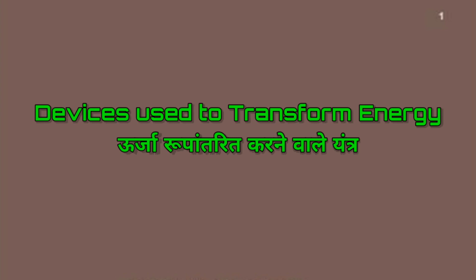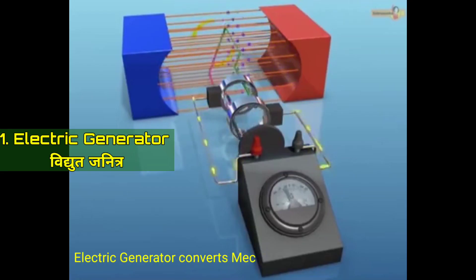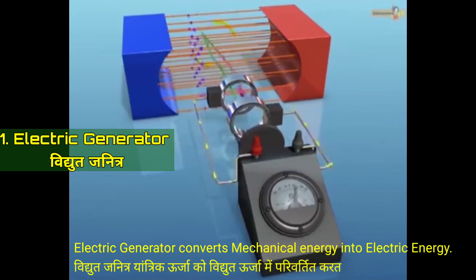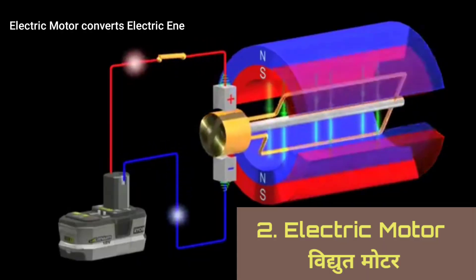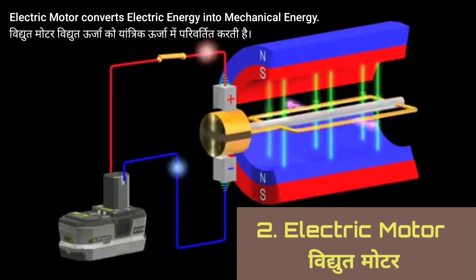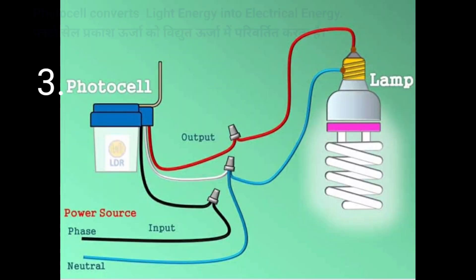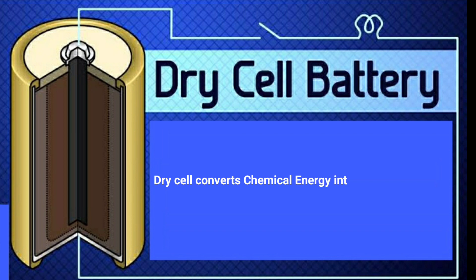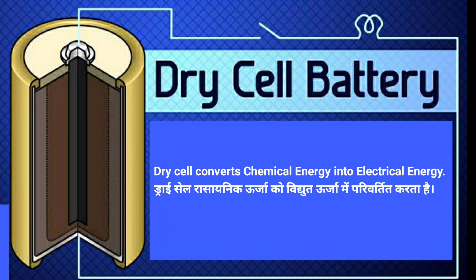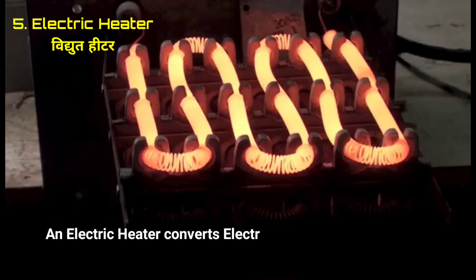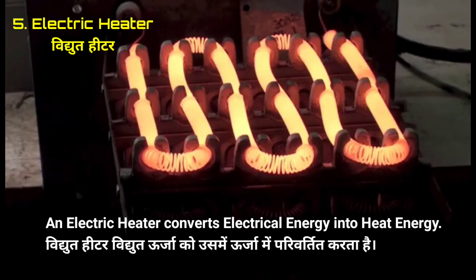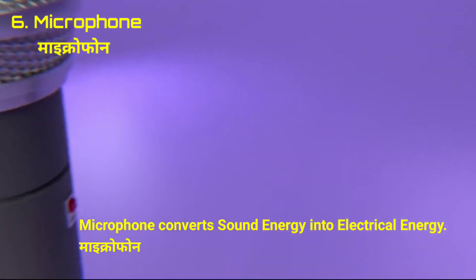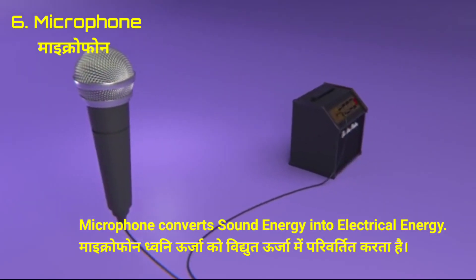Devices used to transform energy — Urja Rupantrit Karne Wale Yantra. Electric generator converts mechanical energy into electrical energy. Electric motor converts electrical energy into mechanical energy. Photo cell converts light energy into electrical energy. Dry cell converts chemical energy into electrical energy. An electric heater converts electrical energy into heat energy. Microphone converts sound energy into electrical energy.